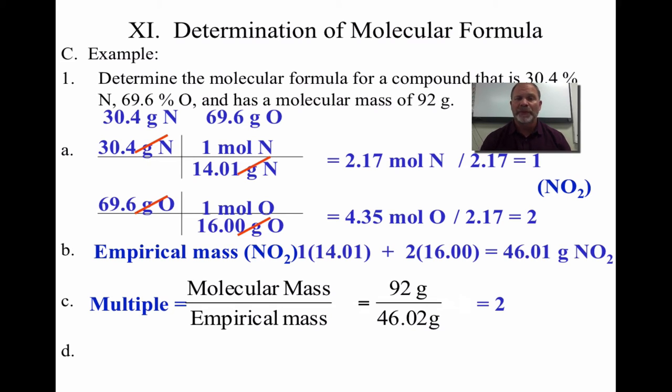I use my regular rounding rules here. So now I'm going to go back to my NO2 and distribute two through it, and it's going to raise it up to N2O4, which is the molecular formula. Dinitrogen tetroxide.